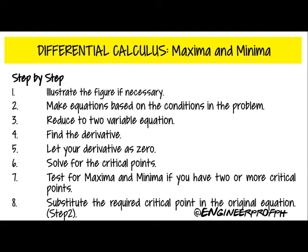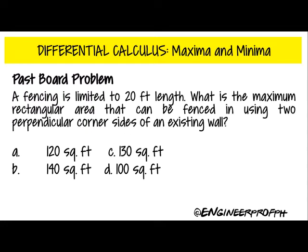The last step is to substitute your critical points into your original equation from step two. So let's try solving sample problems. These problems are taken from past board exam problems. In the first problem, fencing is limited to 20 feet in length.